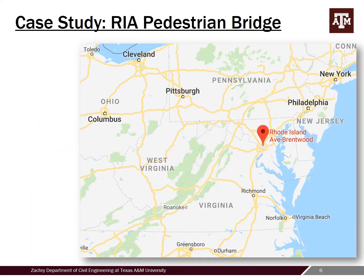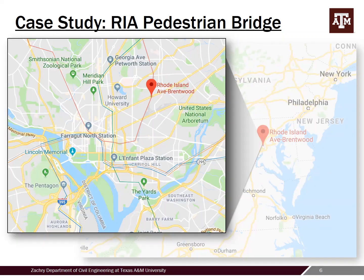I'm going to illustrate pedestrian bridge design through a case study called the Rhode Island Avenue pedestrian bridge — a project I worked on a number of years ago when I was with Amman and Whitney. It's located in Washington DC, as you can see on the location map, and the contract was through DDOT, which is Washington DC Department of Transportation. There were a lot of agencies involved. Zooming in, you can see it's northeast of downtown Washington DC — landmarks include the Pentagon for reference and Howard University — and the project site was at what's called the Rhode Island Avenue metro station.